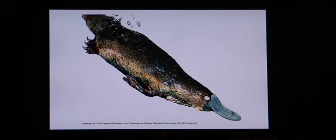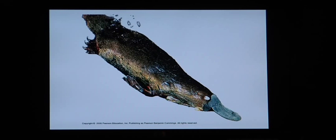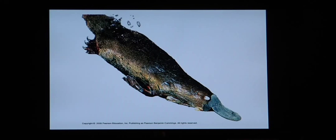We have an example here — this is called a platypus, a duckbilled platypus. If you look at it right offhand, it kind of looks a little bit like a bird because it has a beak. But we see that it has fur, and birds don't have fur, they have feathers — so it's not a bird. The other weird thing is that it lays eggs, which is not something mammals do, but this is a mammal. It's a special type of mammal called a monotreme, and we'll talk about that more as we get closer to the end of this chapter.